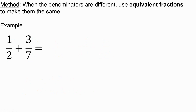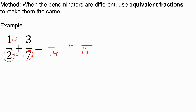One half plus three sevenths. I notice that the lowest common multiple of two and seven is fourteen, so that's what I'm going to use as my denominator. I multiply two by seven and the one on top of the fraction by seven, then seven by two and three by two. I get seven plus six, which is going to be thirteen over fourteen as my answer.